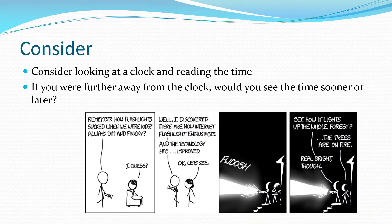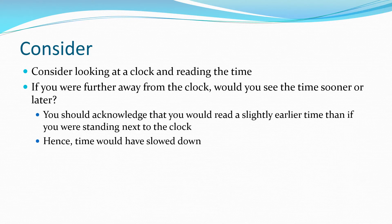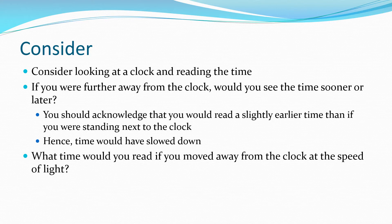If you're looking at a clock from far away, it would appear to be running behind — showing an earlier time — because it takes time for the light to reach you. Time appears to pass more slowly on that distant clock. If you moved away from the clock at the speed of light, you would be moving away at the same speed as those light beams, and hence time would appear to stop for you.